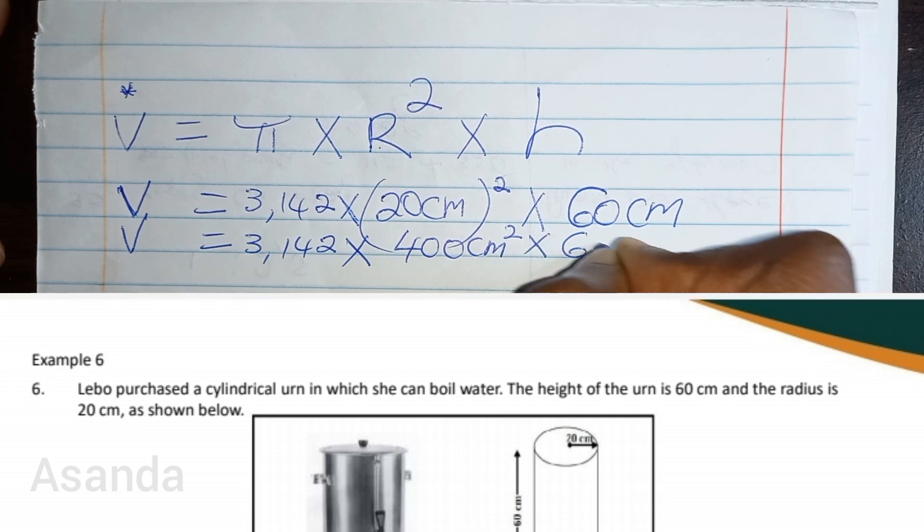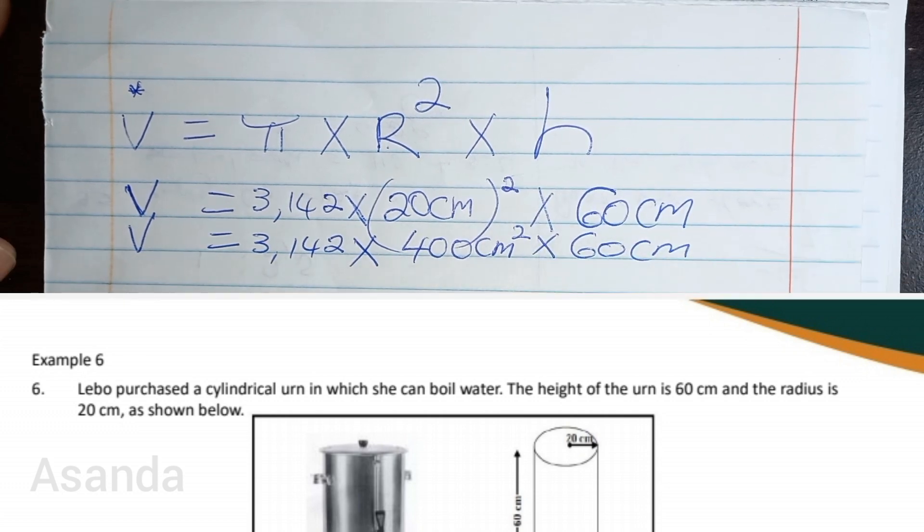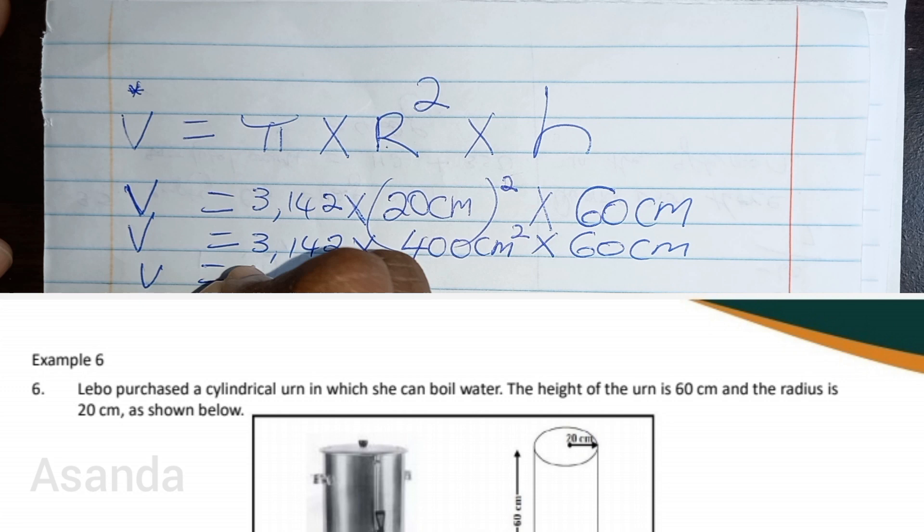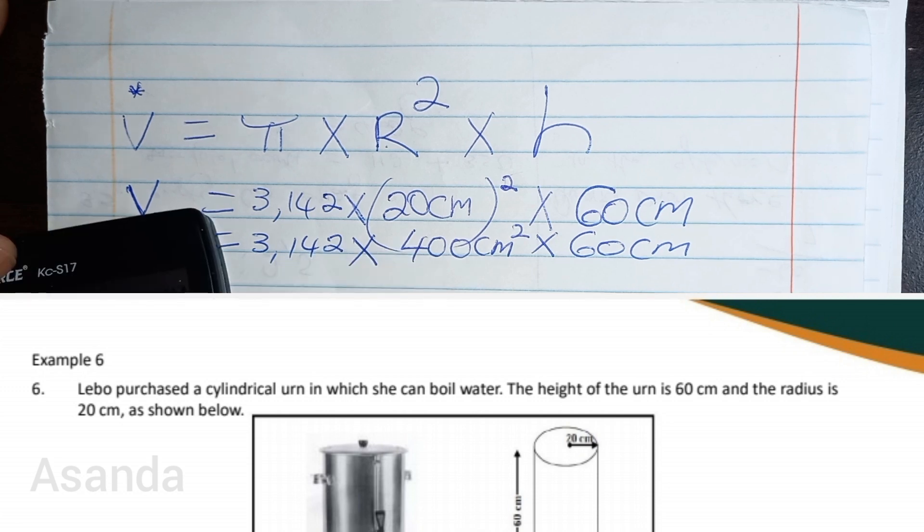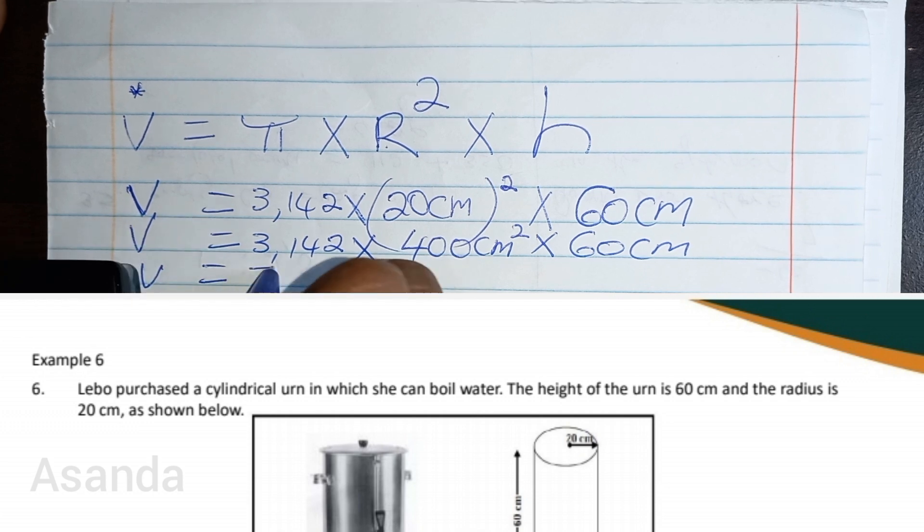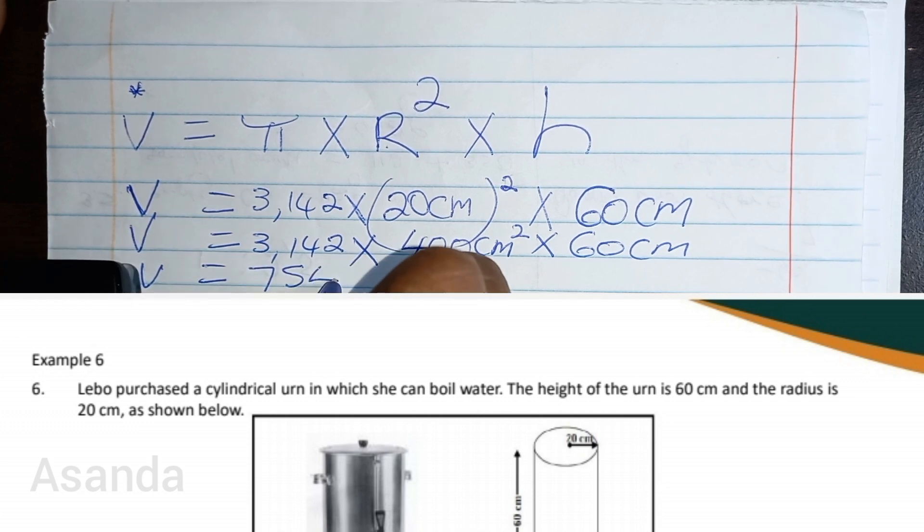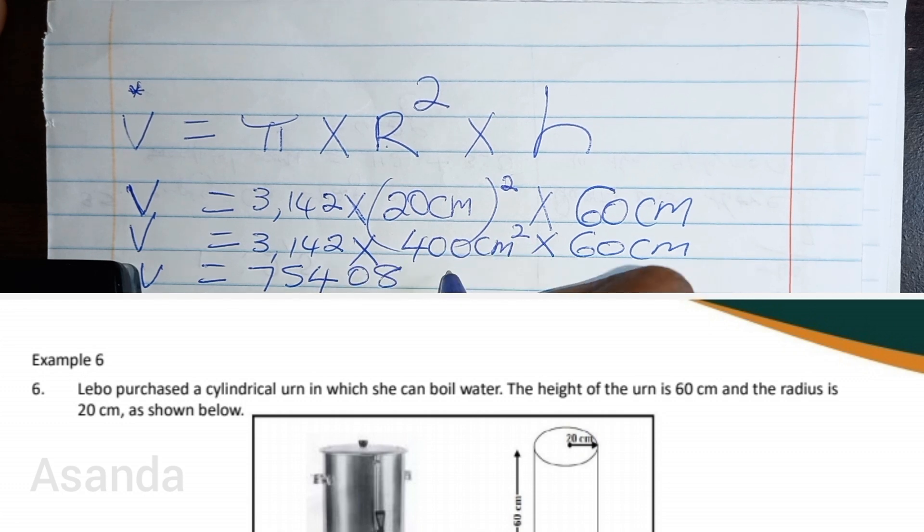My volume is now equal to 3.142 multiplied by 400 multiplied by 60, and it gives me 75,408 cubic centimeters.